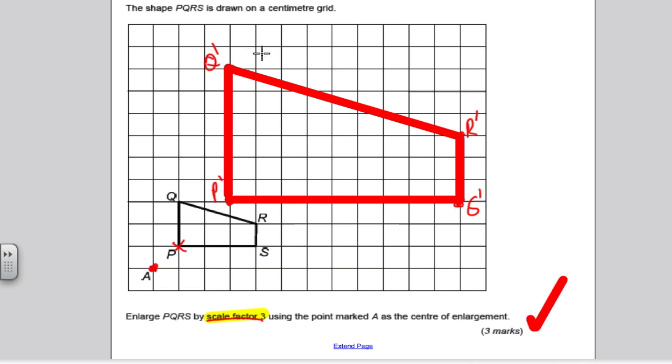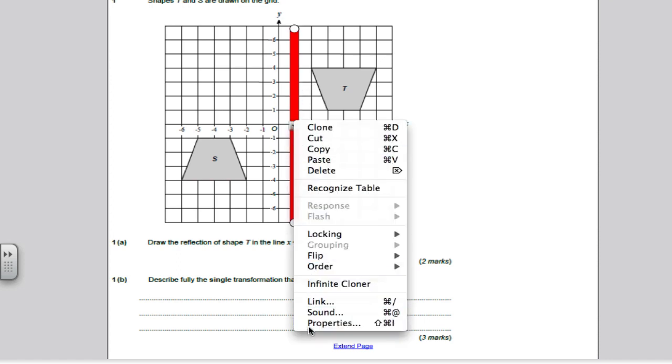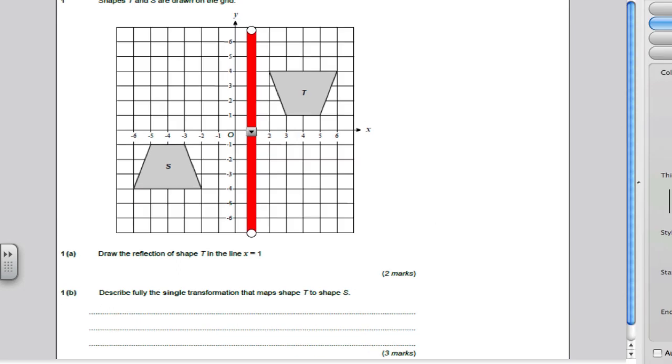Next question, pause the video, have a go, mark your work, and make corrections if needed. It says draw the reflection of T in the line X is 1. First, draw the line X is 1. This is the line X is 1 because all the coordinates along that line are 1. Now, reflect that shape T.